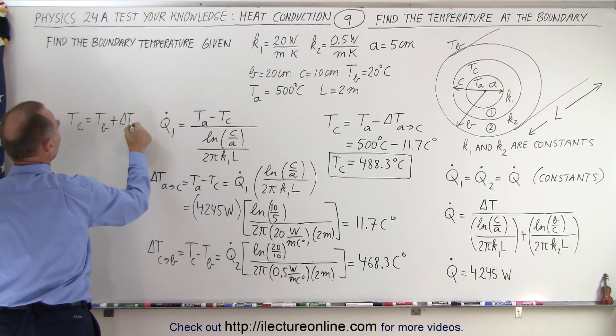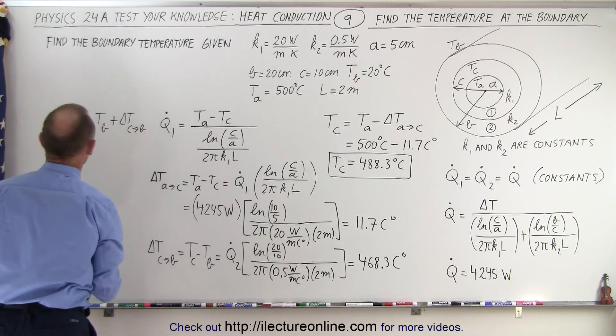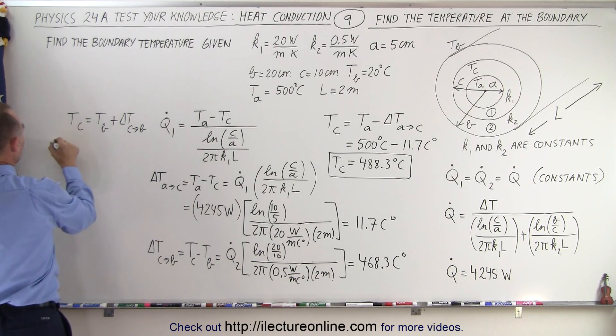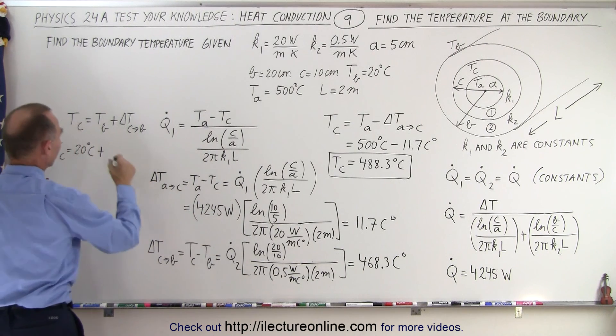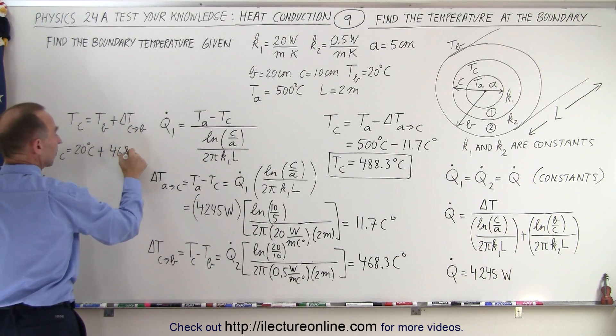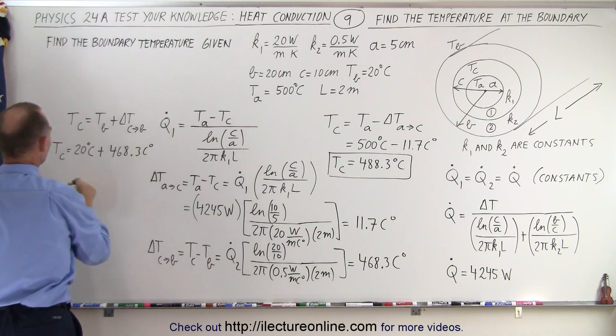The delta T from C to B. So in this case, T sub C is equal to the 20 degrees centigrade plus the delta of 468.3 centigrade degrees.